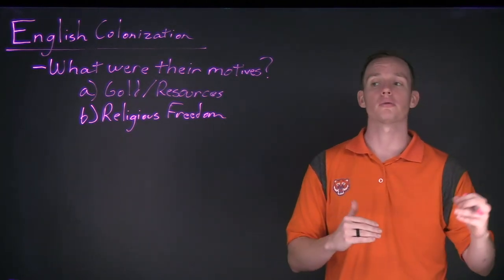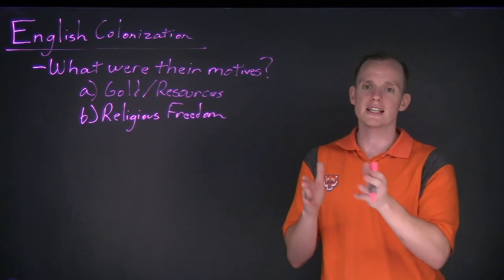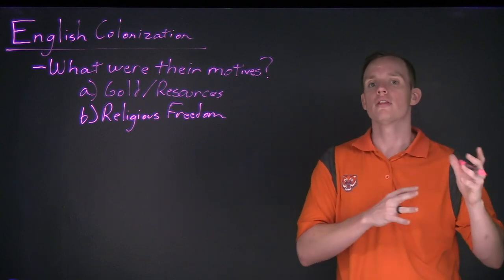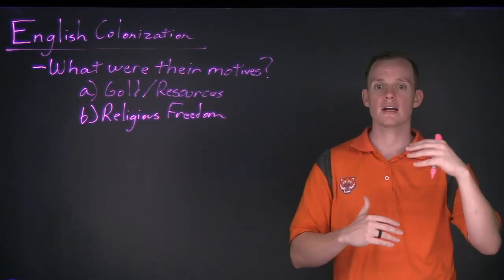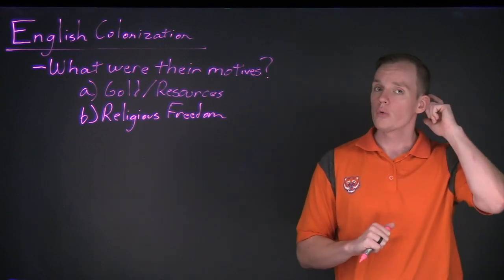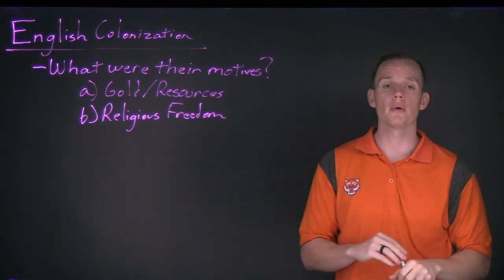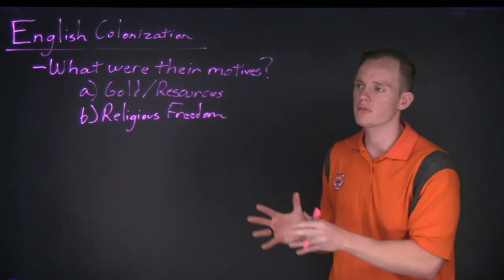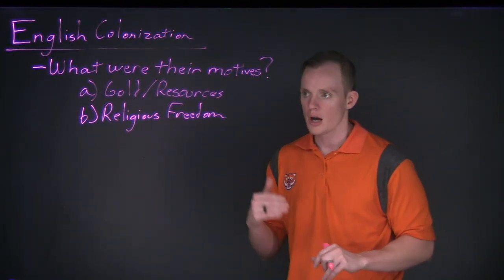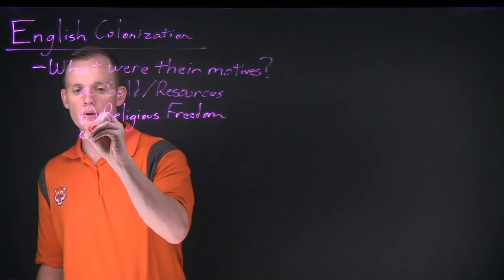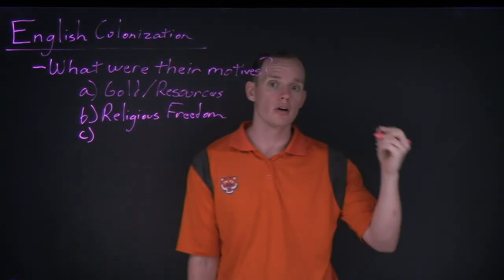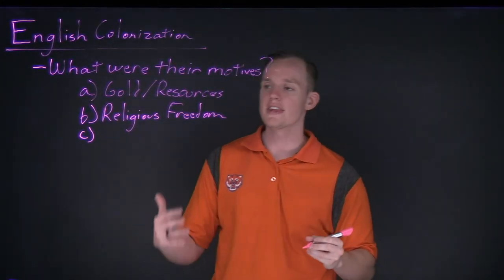Groups like the Puritans and later the Quakers challenged the Church of England, which was headed by the King of England. This led to anti-Puritan, anti-Catholic, and other anti-non-Church-of-England laws being passed against them. Some individuals looked to escape this religious persecution back in England. The last major motive I want to highlight for fueling colonization in the New World was poverty.